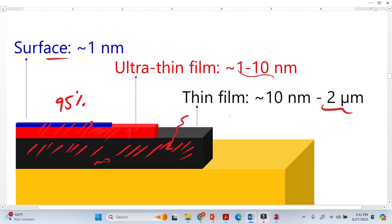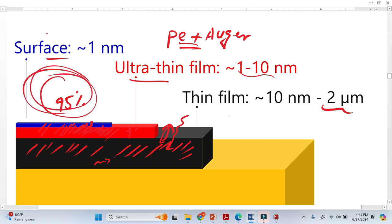Or hardly, it will eject from the surface and that will make the background of the peaks, but not the photoelectron peaks or the Auger peaks. These two peaks will come from the surface and ultra-thin film. 95% of photoelectrons we get from this area.